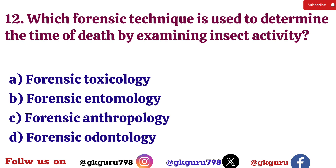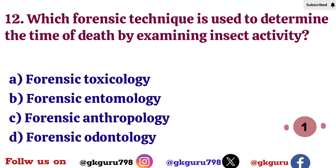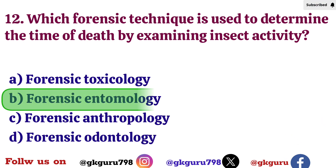Twelfth question: Which forensic technique is used to determine the time of death by examining insect activity? Option A: Forensic toxicology. Option B: Forensic entomology. Option C: Forensic anthropology. Option D: Forensic odontology. Correct answer: Option B — Forensic entomology.